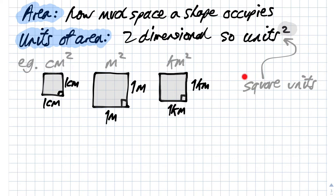Which is also often called square units. Here's some examples: a centimeter by centimeter is a centimeter squared, a meter squared, a kilometer squared. This is obviously not to scale.